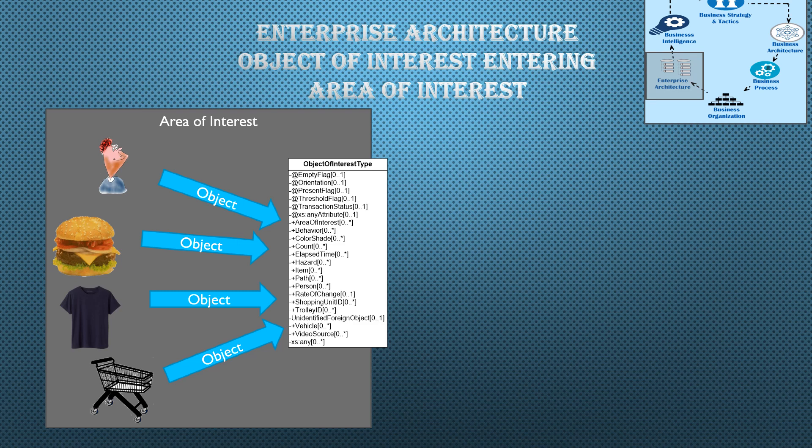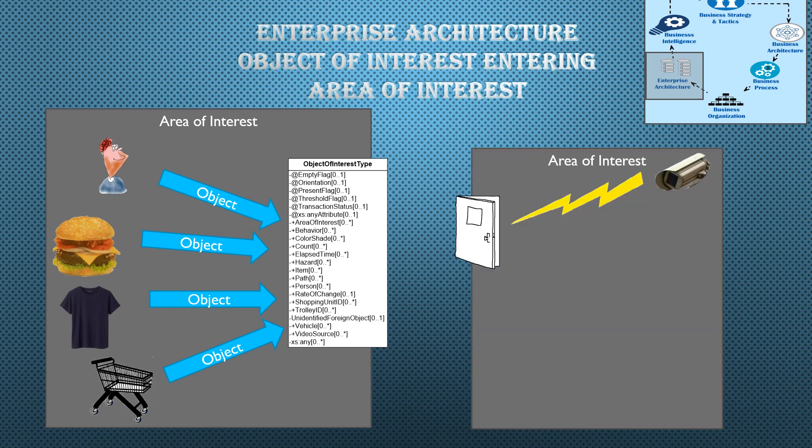Once we've identified the business processes, we need to start looking at what information do we need to support each of those business processes. In the case of video analytics, there are two big key components. One is the object of interest, which in this case are people, places, or things — like shopping carts, or shirts, or hamburgers, or just people themselves become objects of interest. Those objects of interest exist inside an area of interest. You could subdivide your store into multiple areas of interest for different types of business processes you want to monitor. In this case, we want to monitor a door and see if somebody goes into or out of it that they're not supposed to — it's a secure area of some type — and we can use the video analytics to analyze that entry or exit.